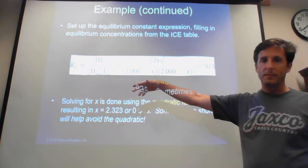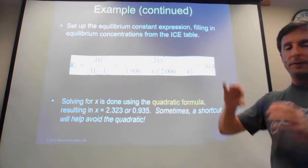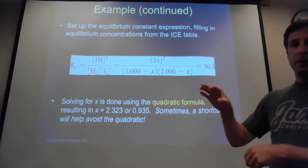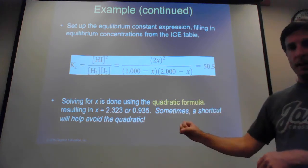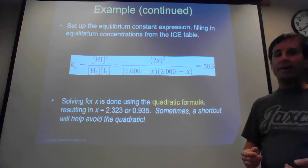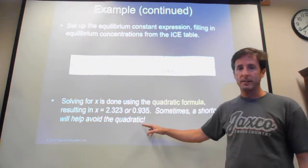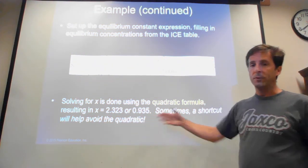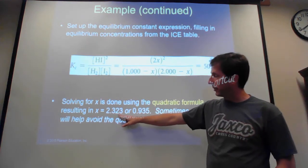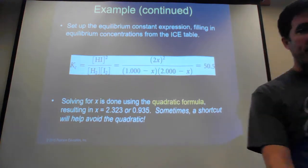We now have an x² term, an x term, and a constant, so we rearrange everything to one side and set up the quadratic formula: 0 = ax² + bx + c. The problem gave us the value of K, so we can solve for x. The quadratic equation always gives two answers; solving gives x = 2.323 or x = 0.935. Only one of those values can be correct.